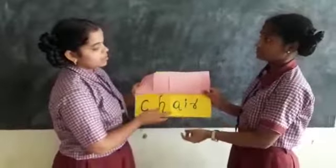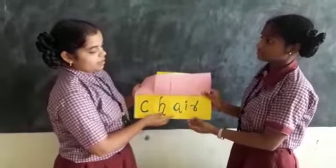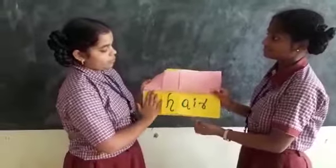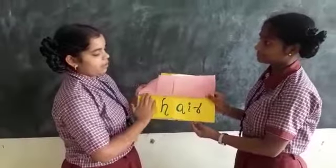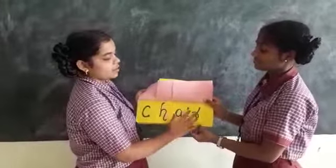And next is the word change. So if we close C, we have hange. If we close H, we have a different form.